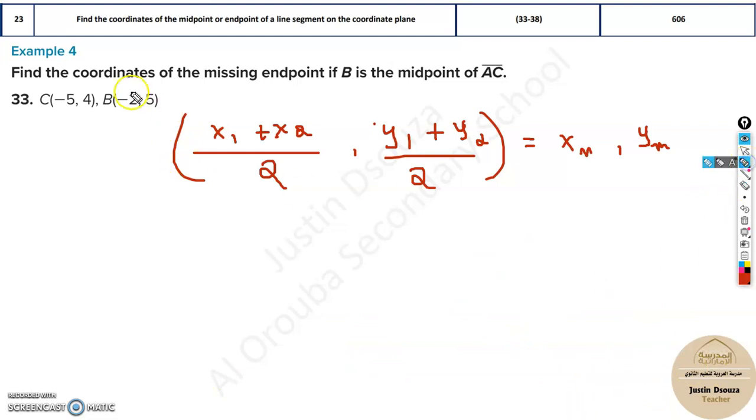Now in this particular question, B is the midpoint. Find the coordinates of the missing point if B is the midpoint. So whatever is mentioned over here is the xm and ym. So the answer is given as minus 2 comma 5. But what is missing? One of the points is missing. A is missing. This is unknown. So I will consider this minus 5 plus unknown value x2 divided by 2. We know the answer of this will be xm, that is minus 2.